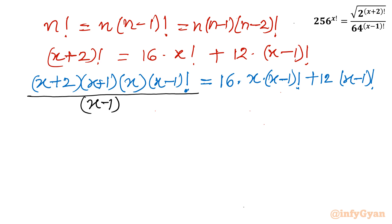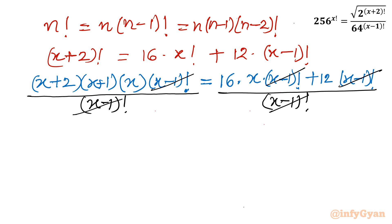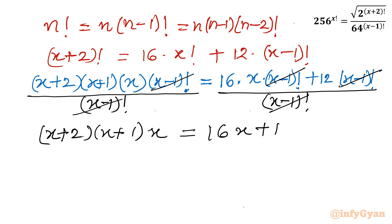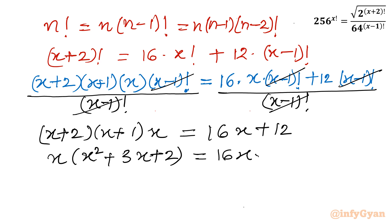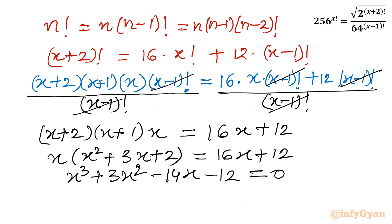Expanding the left-hand side: x times (x+1)(x+2) gives x³ + 3x² + 2x. Moving everything to one side: x³ + 3x² + 2x − 16x − 12 = 0, which simplifies to x³ + 3x² − 14x − 12 = 0. This is a cubic equation. We can use synthetic division and the rational root theorem. The factors of the constant term 12 are ±1, ±2, ±3, ±4, ±6, ±12.